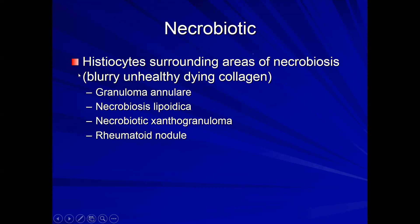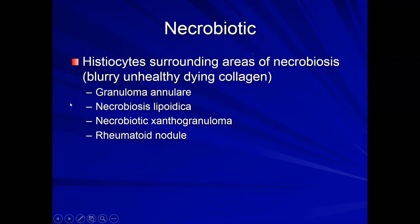The necrobiotic category includes palisading and interstitial patterns. Necrobiosis means blurry, unhealthy, dying collagen — not yet dead. Dead collagen would be lacking nuclei, completely pink, and non-viable. Necrobiosis is somewhere in between — blurring of the cells with some blue granular material, unhealthy but not quite dead. These entities fall into this necrobiotic category.